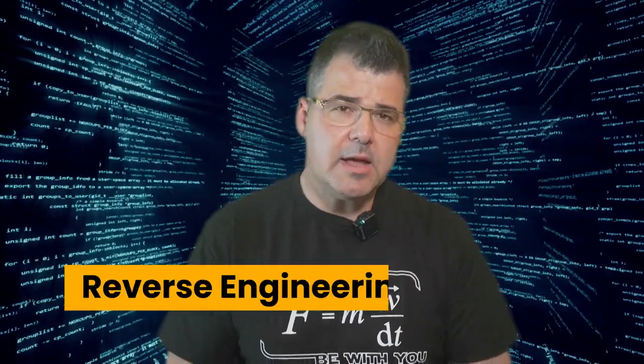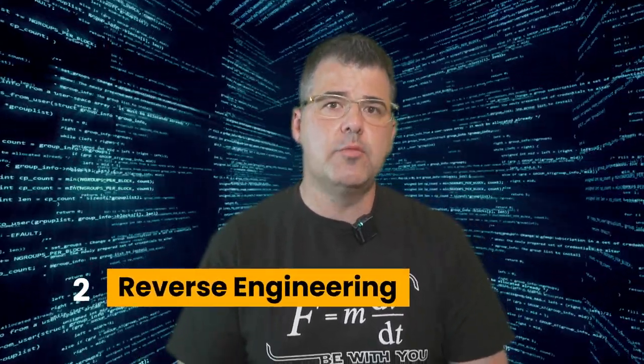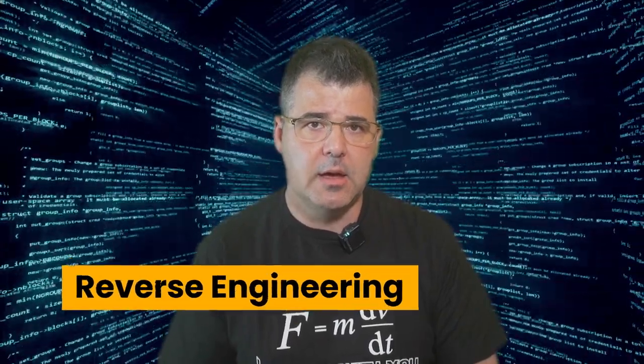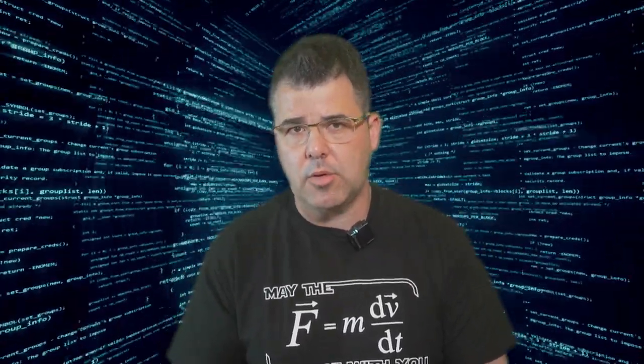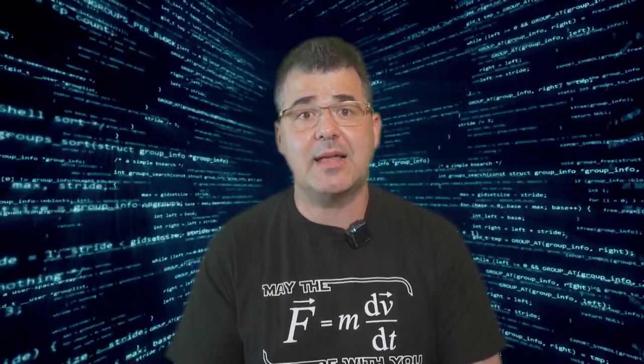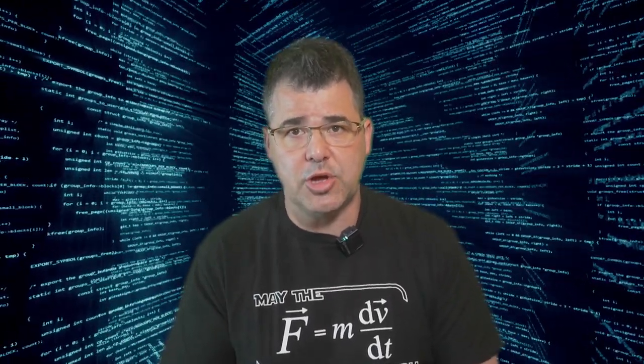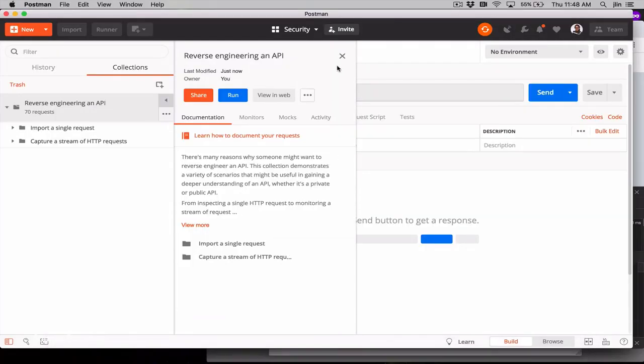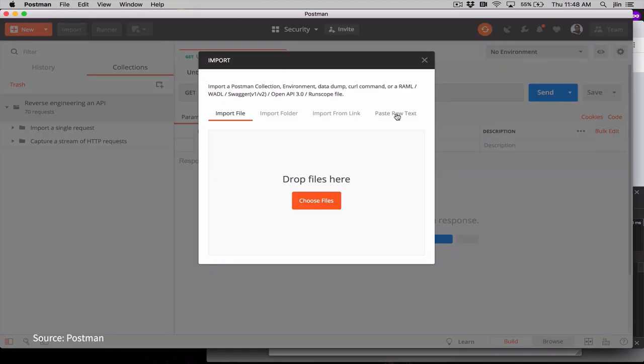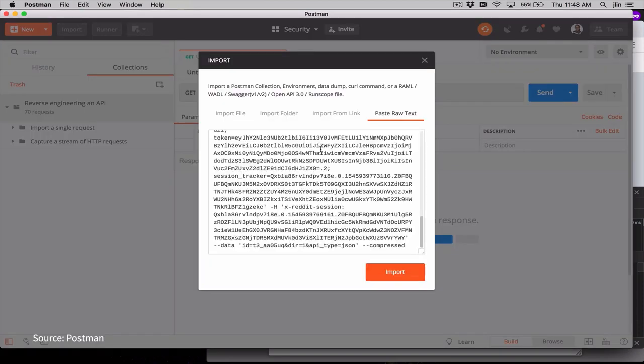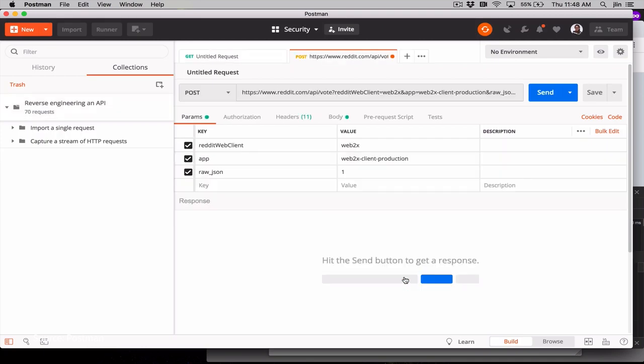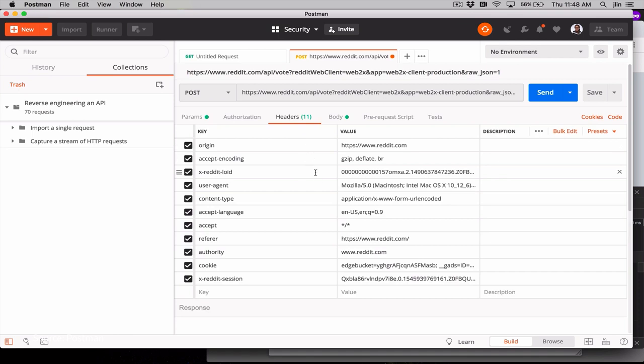The second way is reverse engineering. If you want to master API hacking, you must understand how the API works. This means reading the documentation and understanding what the API does. Once you know the API well, you can start to reverse engineer it and start experimenting with it. This means trying out different API calls and seeing what happens. You can also look at the API code to see how it works. Once you understand the API and how it works, you can start to look for vulnerabilities.